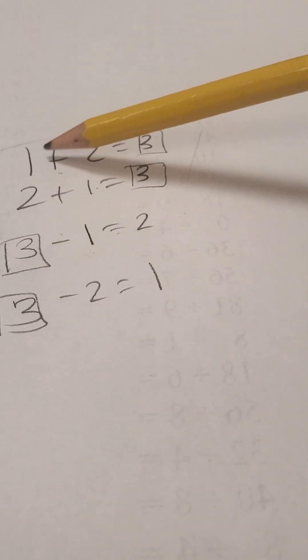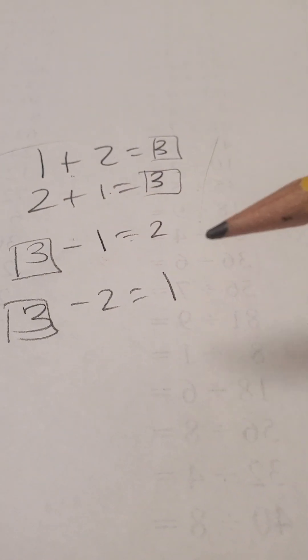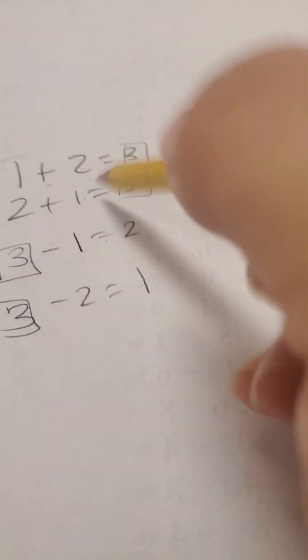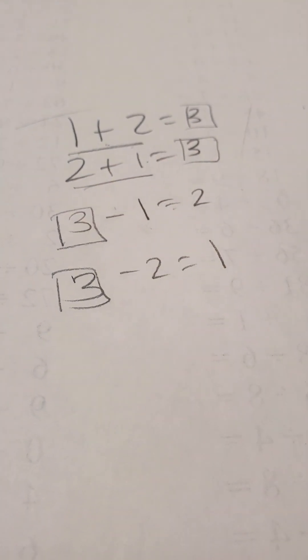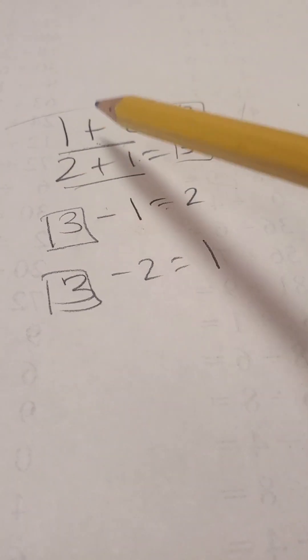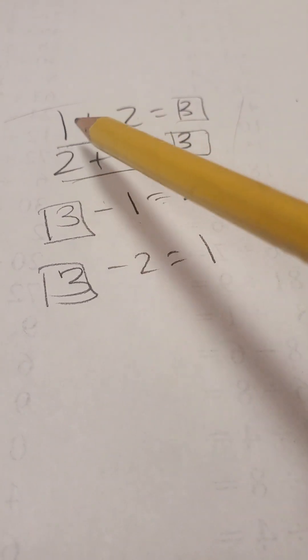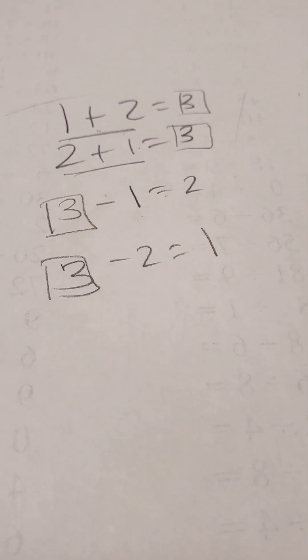All right. 1 plus 2 equals 3. So if that's true, then with addition I can switch it. 2 plus 1 is also 3. That is a rule. That means that with addition, I can switch the order of what I'm adding, and it doesn't matter.